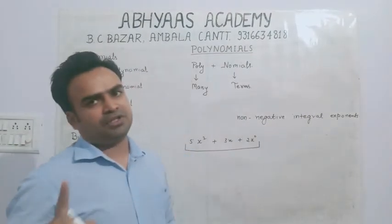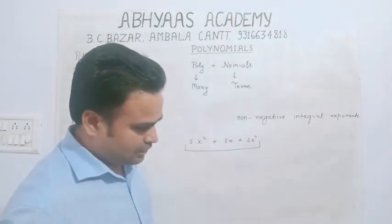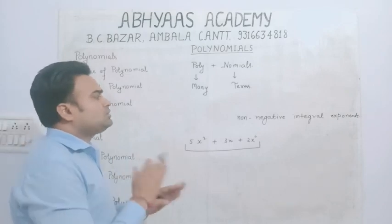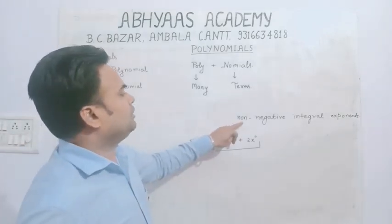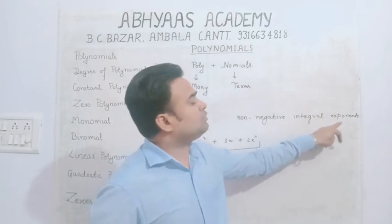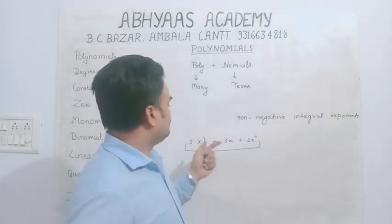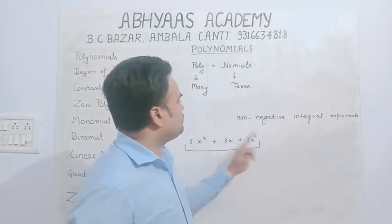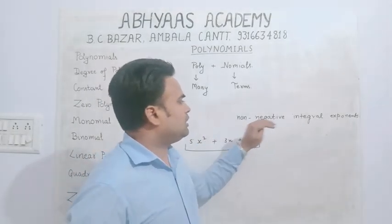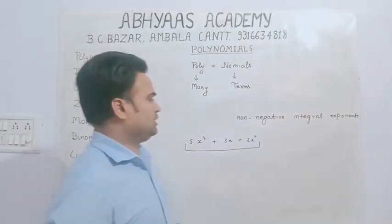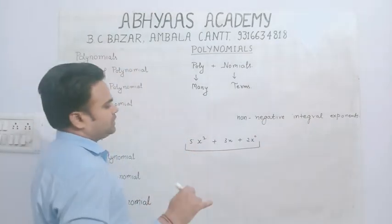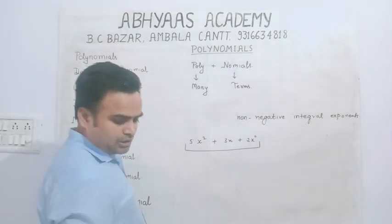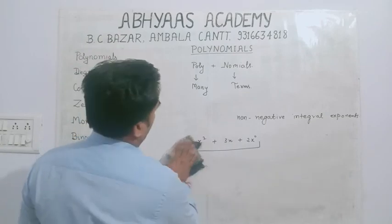तो polynomial की definition क्या आई? Polynomial एक algebraic expression है, जिसमें multiple terms होती हैं, और जिसमें variables की जो power होगी, वो केवल positive होगी और हमेशा integral form में होगी। कोई भी power 1/3, 2/3 के form में नहीं होगी।